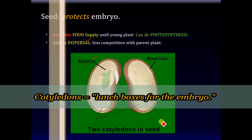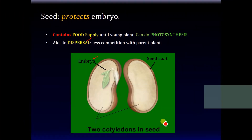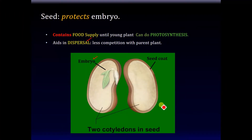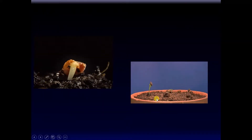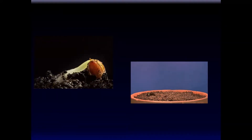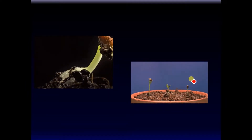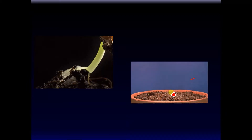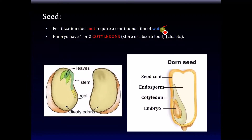Seeds can basically be divided into those that have one cotyledon or two. The analogy is like having one lunchbox or two lunchboxes — those with one lunchbox are called one-cotyledon seeds, and those with two are called two-cotyledon seeds. Seeds of course have a protective coat. As a seed grows before it's able to do photosynthesis, it needs the nutrient supply provided by the stored food. Once the young plant is able to do photosynthesis, it can grow unencumbered, producing its own food. In seed plants, fertilization does not require a continuous film of water, as is the case in more primitive plants.